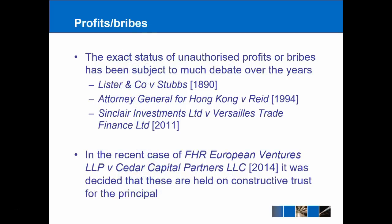The status of unauthorised profits or bribes is possibly something that might come up as part of an essay question, and it has changed quite a lot over the years. Lister v Stubbs from 1890 originally said there wouldn't be a constructive trust. That was reversed to an extent in Attorney General of Hong Kong v Reid in 1994, and then looked at again in Sinclair Investments in 2011. But if you just need to know what the law is today, then in FHR European Ventures from 2014, it was decided that these profits or bribes — the unconscionable conduct where a trustee or someone in a fiduciary relationship is making a profit — are going to be held on a constructive trust.